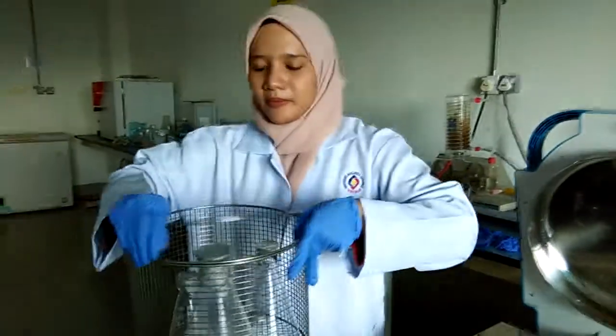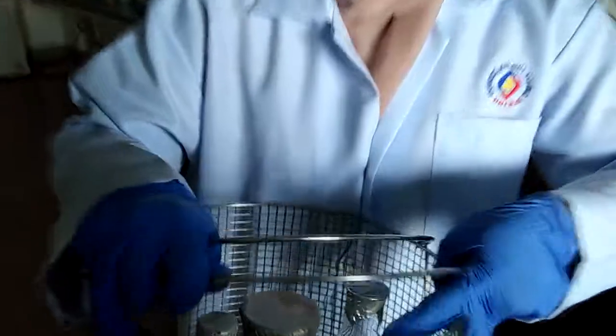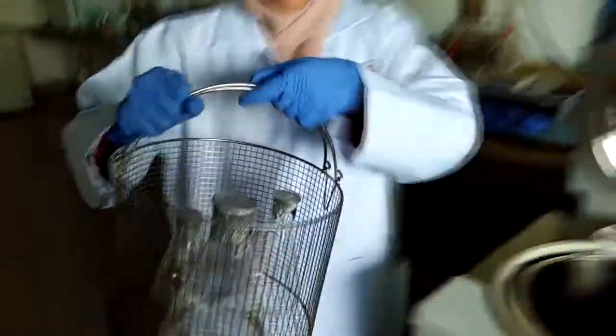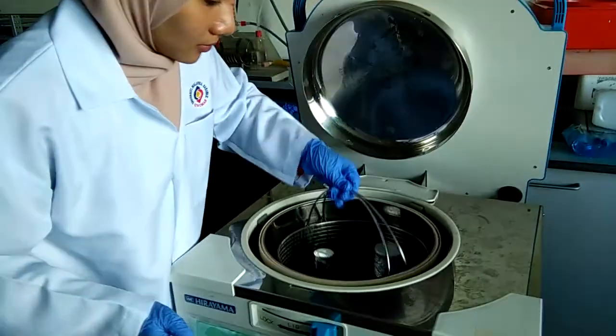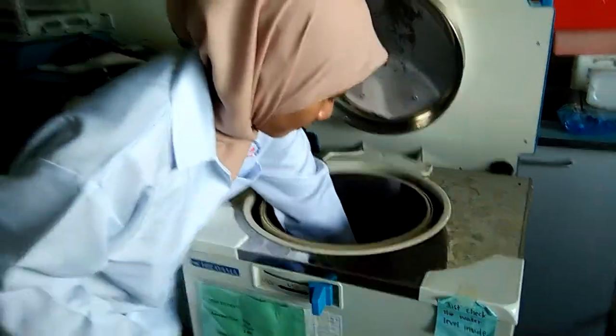After that, prepare the material needed to be autoclaved. Make sure to cover the open beaker or flask with aluminum foil. Put the material inside the autoclave machine slowly.